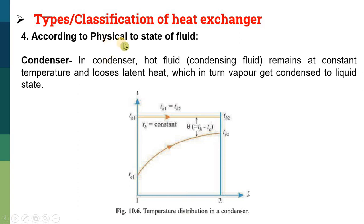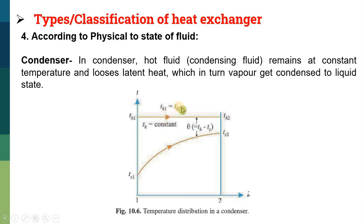The next criteria is classification according to the physical state of the fluid. The fluid may be in a liquid, solid, or vapor state. The first example is a condenser. In a condenser, the hot fluid remains at constant temperature and loses latent heat, which causes the vapor to condense to a liquid state. In the graph of temperature versus length of the heat exchanger, the hot fluid temperature remains constant (TH1 equals TH2), while whatever latent heat is lost by the hot fluid is absorbed by the cold fluid, increasing its temperature from TC1 to TC2.